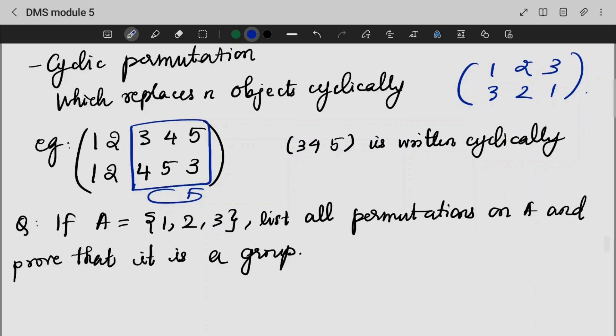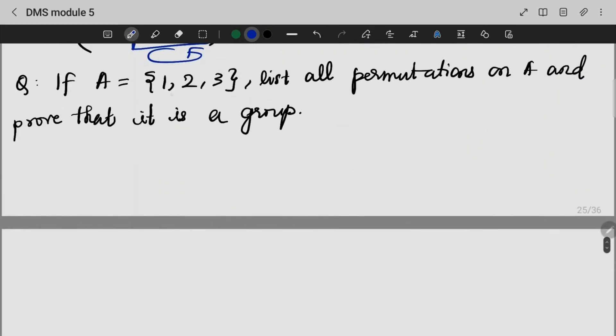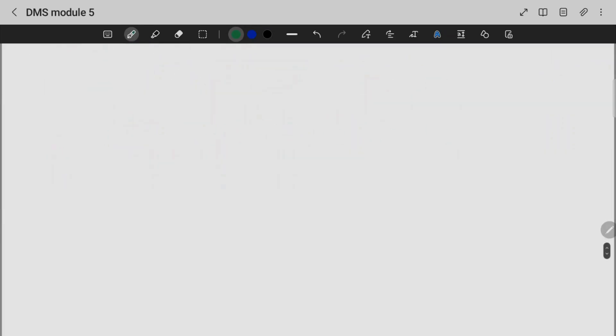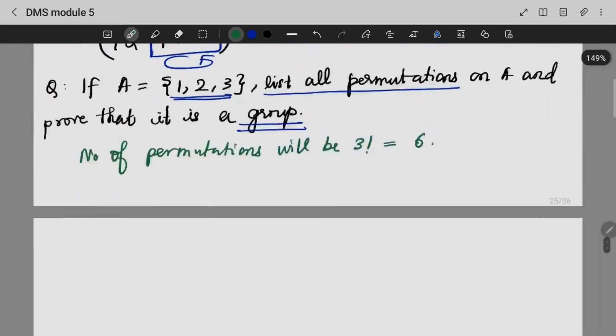If A is equal to 1, 2 and 3, list all the permutations on A and prove that it's a group. Since there are 3 elements, the number of permutations will be 3 factorial, which is nothing but 6. So in this case, let's see what we are doing.